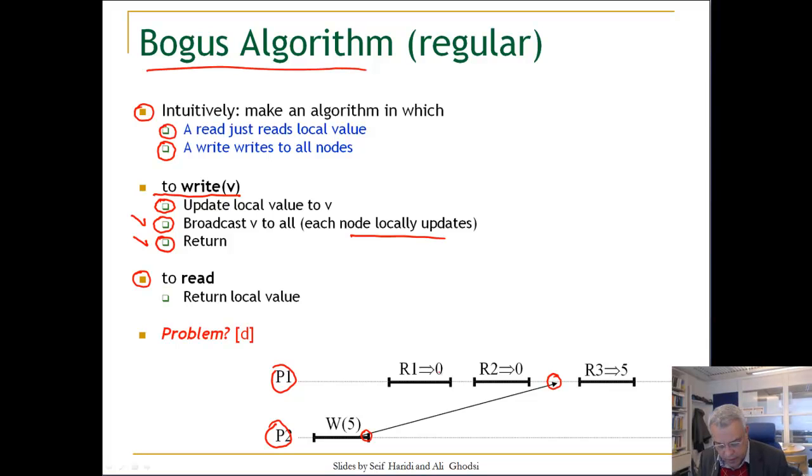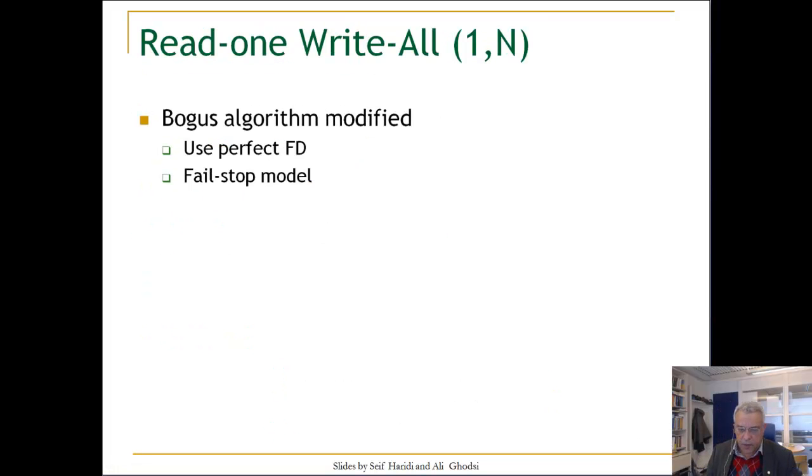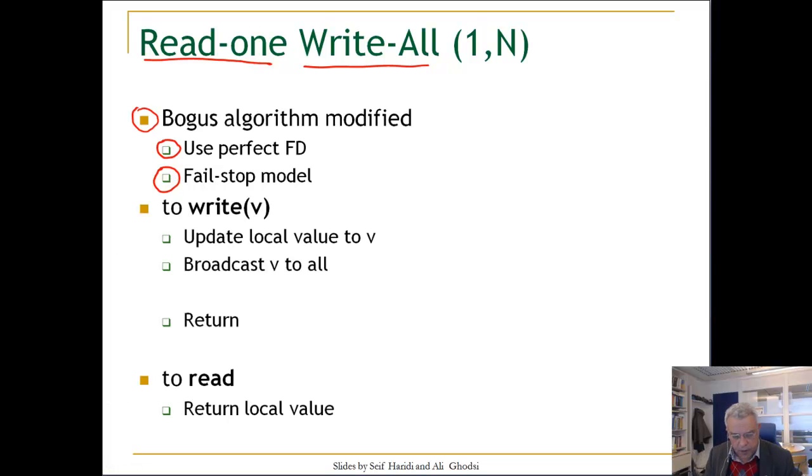The last value written in this case will be the value of 5. But no problem, this we can change easily. We are still in read one, write all algorithm. We use a perfect failure detector—that means we are in the fail-stop model. What we do now is before returning, we wait for an acknowledgment from all alive nodes. Our failure detector will keep track exactly of which nodes are alive. We just wait for acknowledgment of alive nodes and then return.